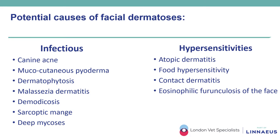Potential causes of facial dermatosis can be grouped as follows. Among the infectious causes, canine acne is relatively common and seen in specific breeds such as short-coated dogs like Great Dane, Dobermans, Boxers or Mastiffs, and it is characterized by multiple papules and pustules affecting the chin. Mucocutaneous pyoderma is less common and controversial, and can be due to multiple etiologies, with lesions present at the mucocutaneous junctions that respond to antibiotic treatment.